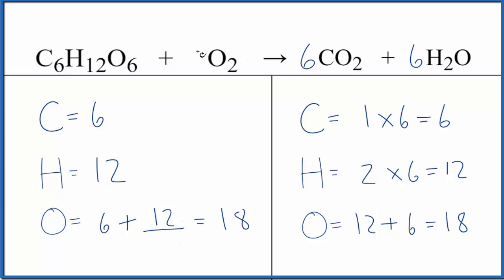So if we put a six in front of the oxygen, we have our six here plus two times six, that's 12. That gives us 18. And we're done. This equation is balanced.